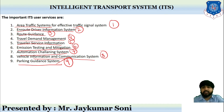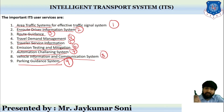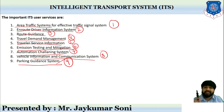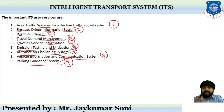To recap: Area Traffic System, Android Driver Information System also called EDIS, Route Guidance — which you might have observed in Google GPS — Travel Demand Management, Traveler Service Information, Emission Testing of various gases and their mitigation measures, Automation Challenging System, Vehicle Information System, and Parking Guidance System. These are the important services related to ITS users.